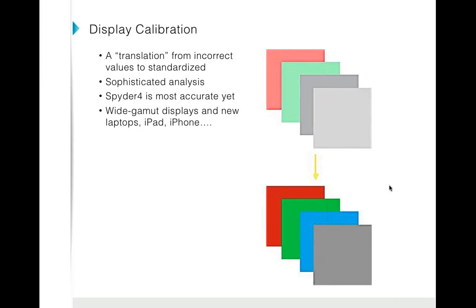The display calibration device is placed on the monitor and shows a series of color patches, which get transformed into accurate color, density, and highlight-shadow detail. A very common problem people bring to me is: 'My prints don't match my screen.' When I ask which colors are off and they say 'the prints are too dark,' I immediately realize the screen is too bright. Getting screen brightness and dynamic range correct is just as important as color accuracy.